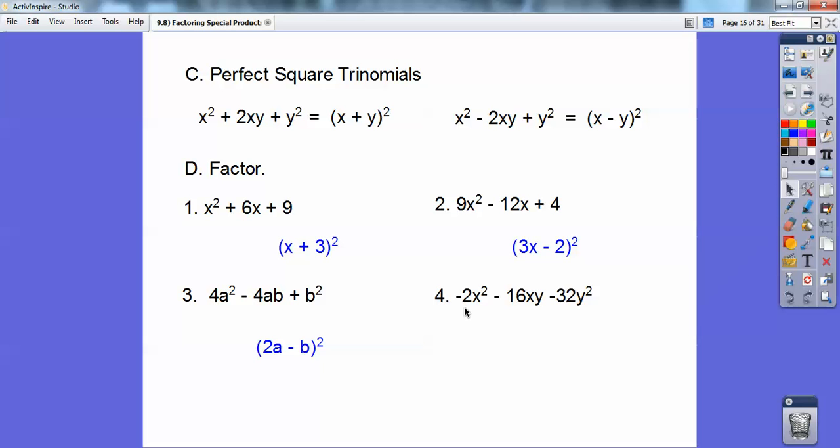This one here looks like I'm going to pull a negative 2 out of all of those first. And when I pull a negative 2 out, it makes a nice, perfect square trinomial. Don't forget the negative 2 that you pulled out. But this is going to be square root of that is x. The square root of that is 4y. So x plus 4y goes in the middle. And it's just double it here. So multiply those, double it. Yeah, it's that right there. Just don't forget your GCF.